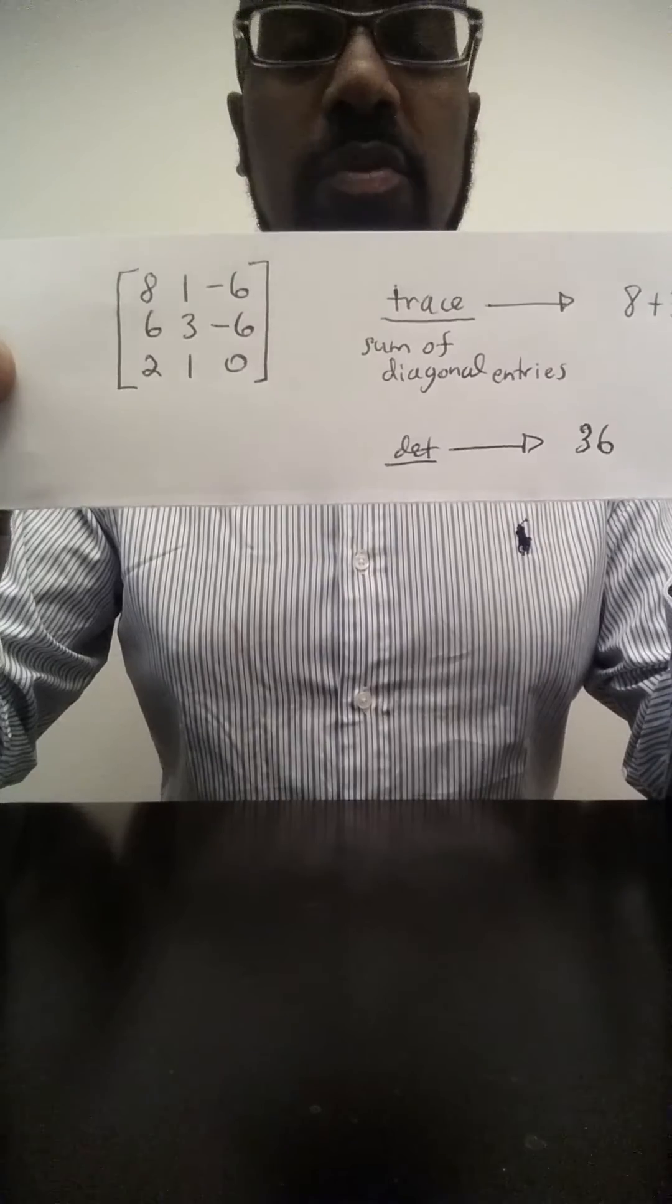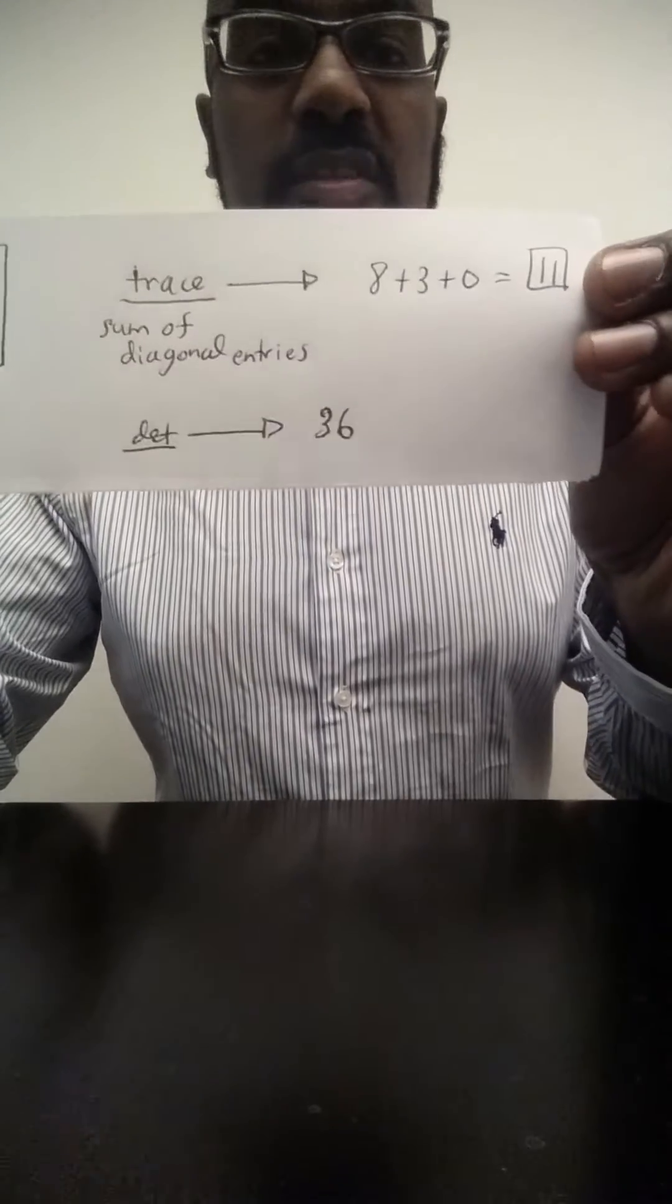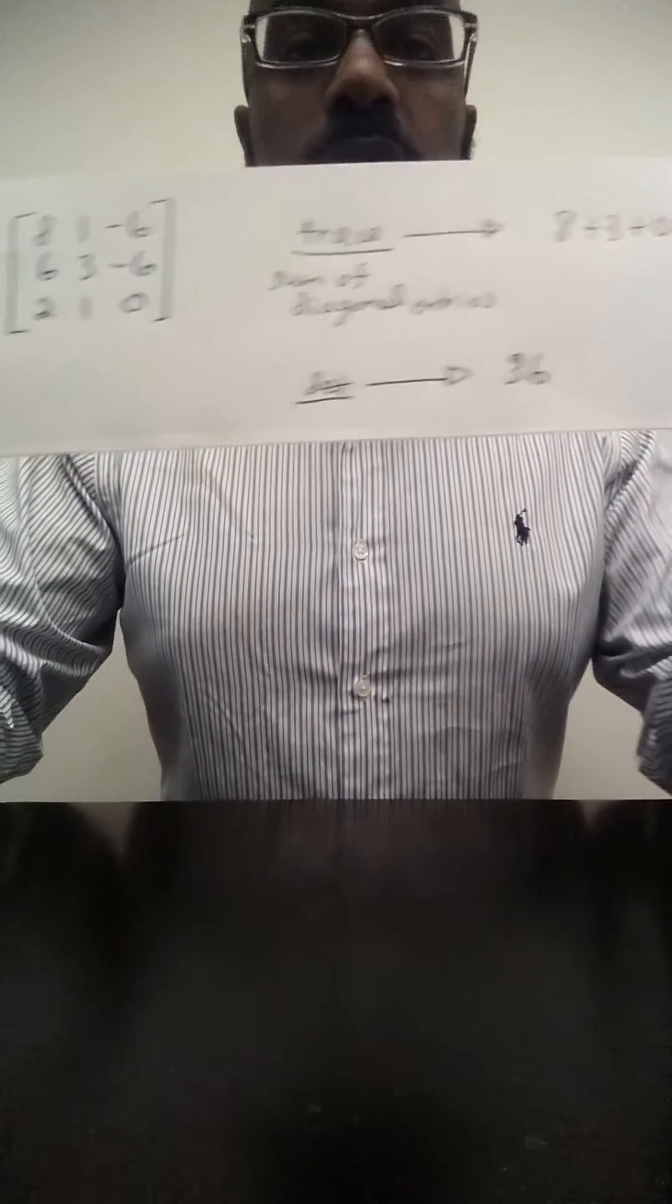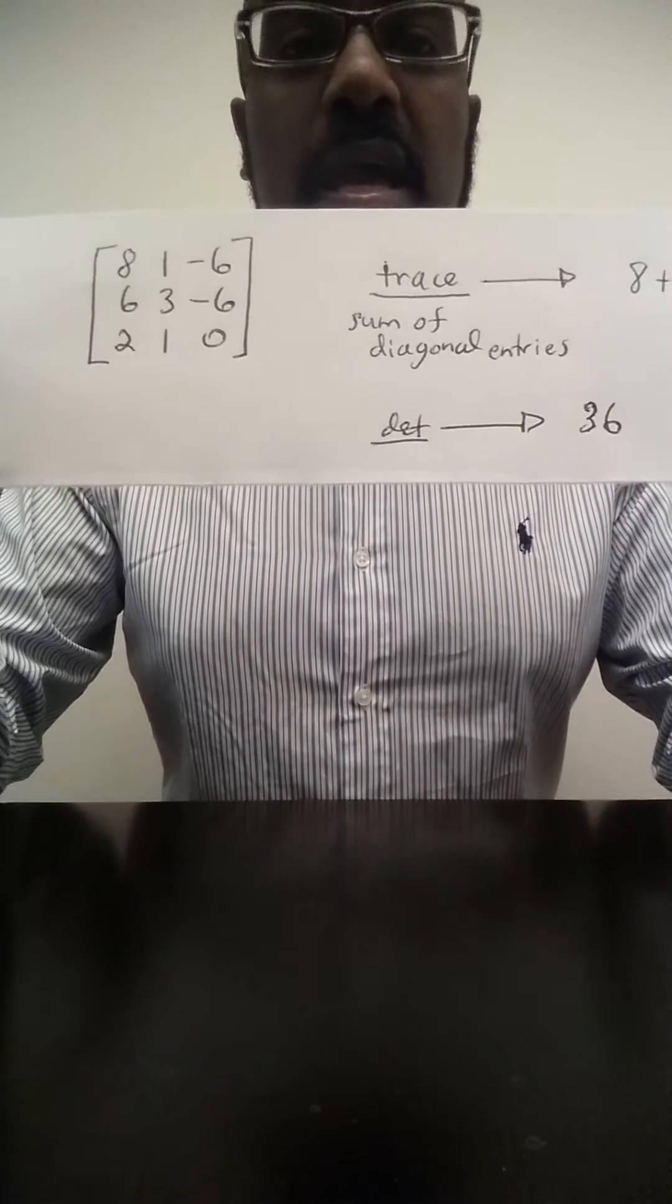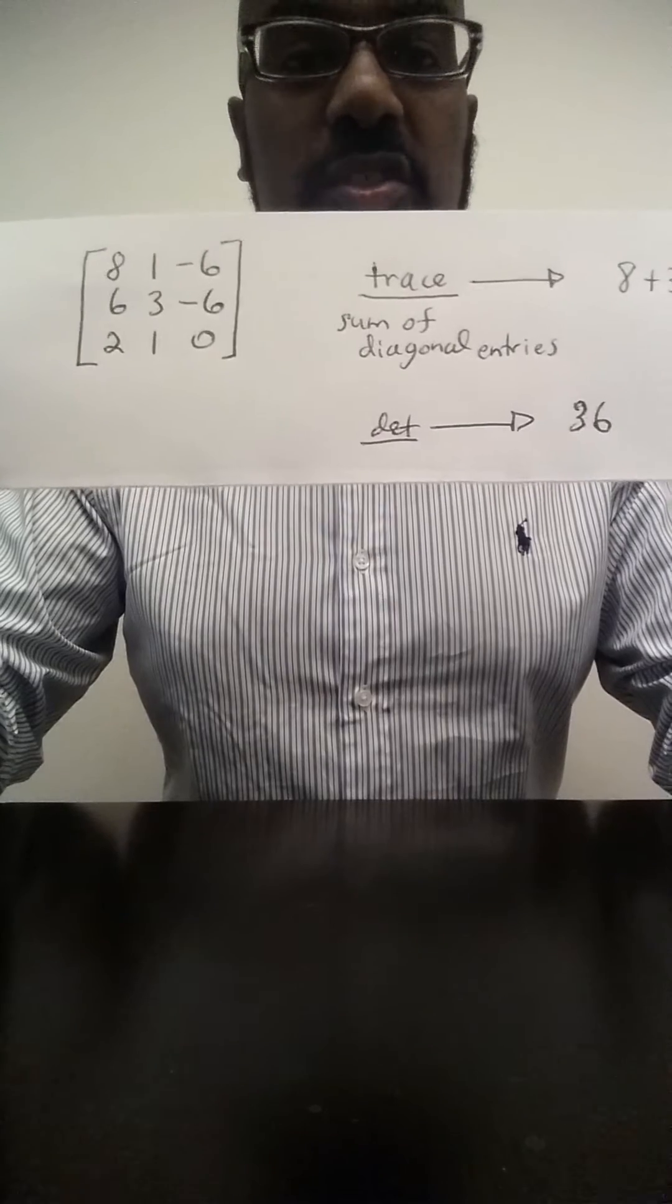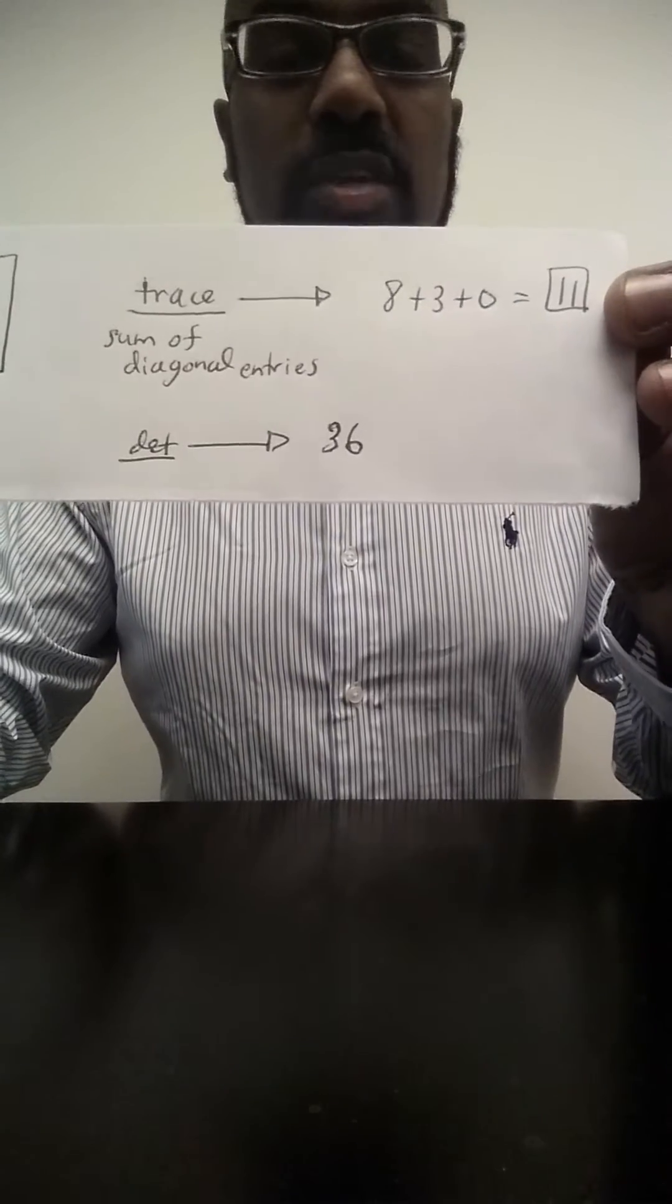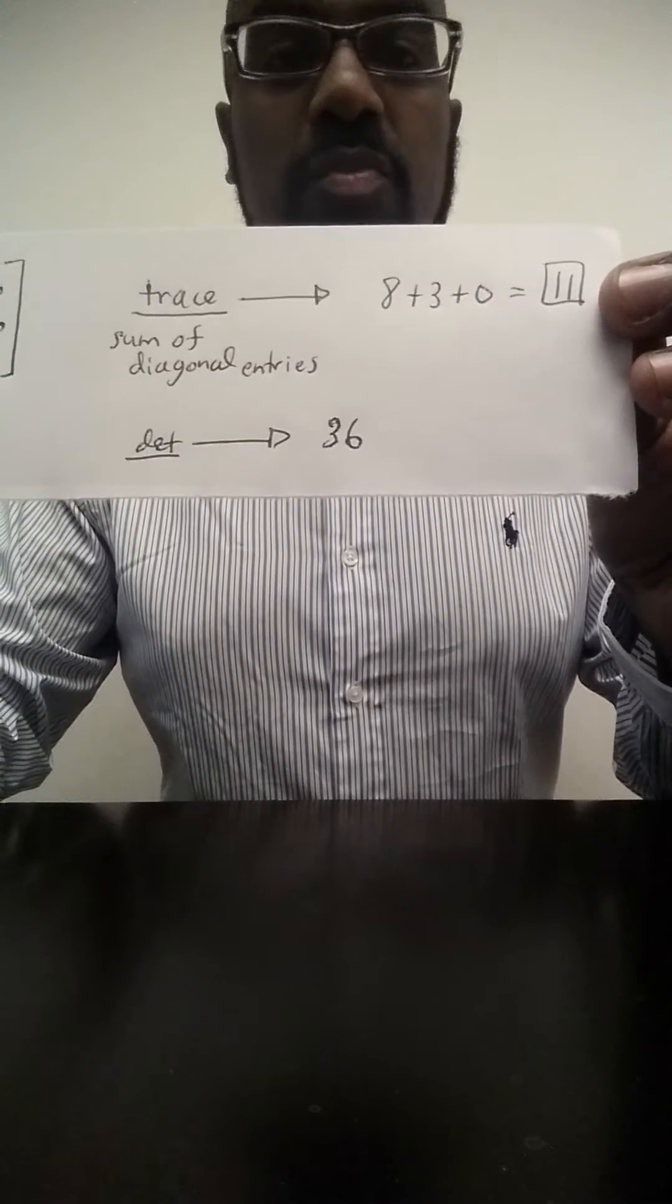The trace of a matrix is the sum of its diagonal entries. And in this case, the diagonal entries are 8, 3, and 0 and so the trace of this matrix is 11. The determinant can be computed using cofactor expansion and in this case the determinant of this matrix is 36. So we have the trace is 11 and the determinant is 36.